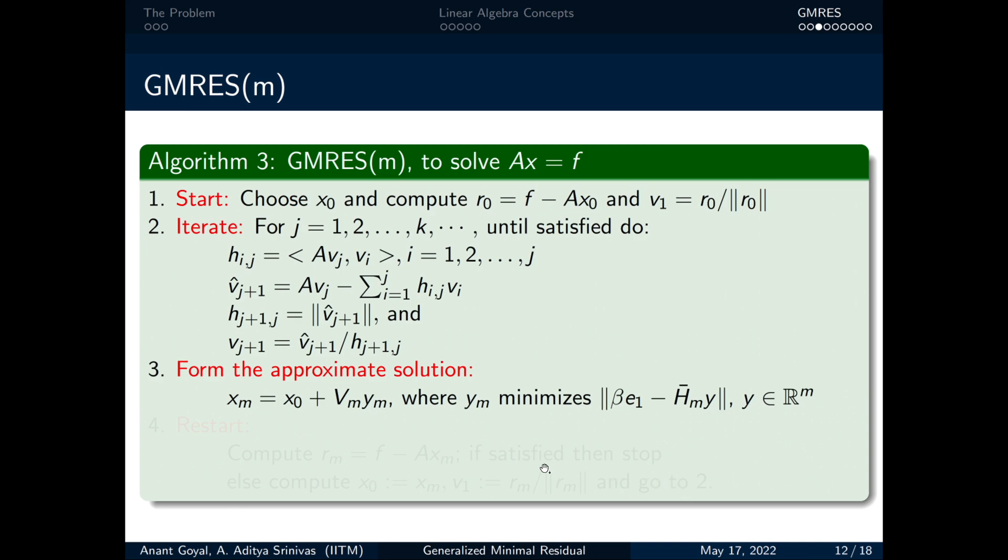Now we modify the algorithm that is keeping steps 1 and 2 the same as the original GMRES. In step 3, instead of subscript k, we use m because now the run stops after m iterations rather than k. In step 4, we define residual rₘ and stop it if it is under tolerance. Otherwise, define x₀ in terms of the latest solutions available for the next run.